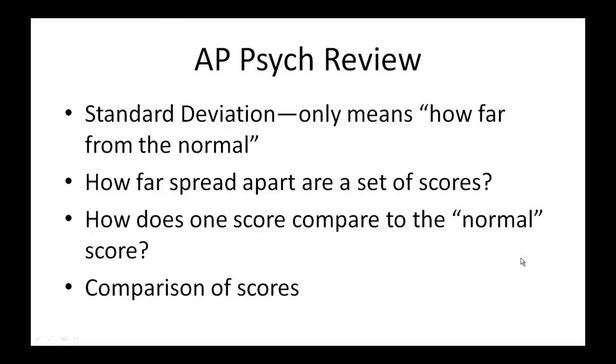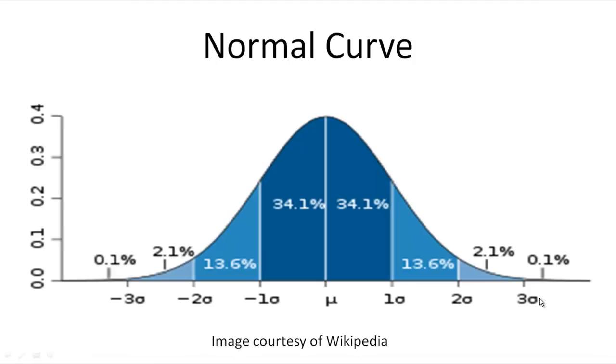When you look at a normal curve, you will notice that you've got the negative 1 sigma or negative 1 standard deviation, the mu or the mean, and then the positive 1 sigma, which is the positive 1 standard deviation. So this is your mean, median, and mode right up here. That particular idea, the mean, median, and mode, is going to be this little vertical line right here.